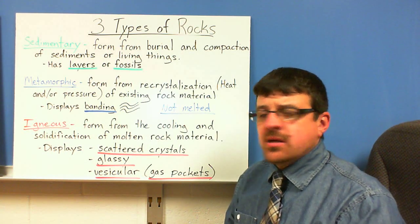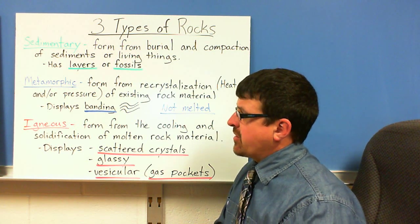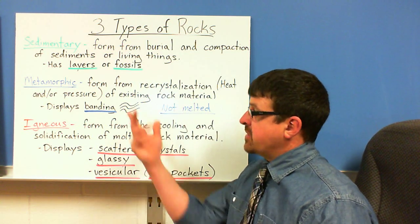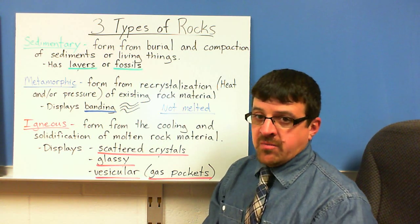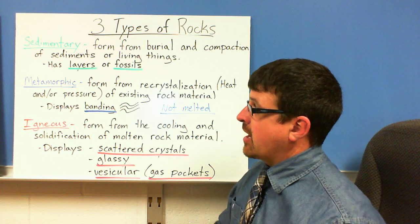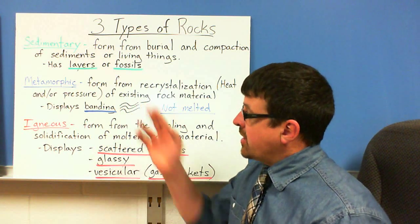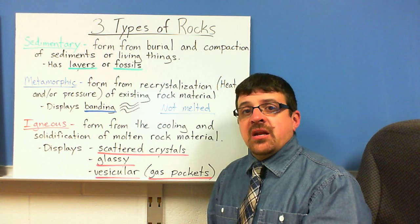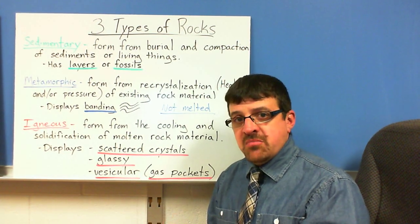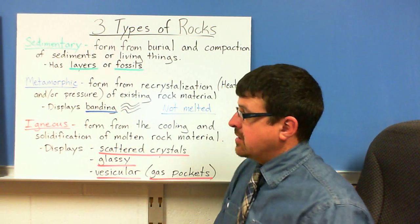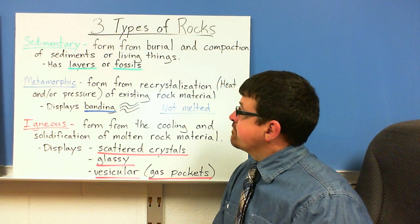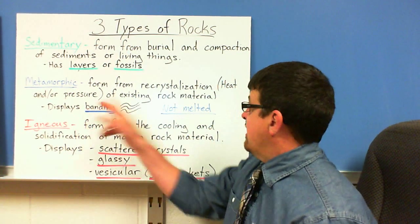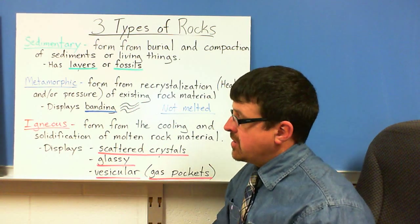Metamorphic rocks form from the recrystallization, or from the heat and pressure, of existing rock material. If you take a sedimentary rock and expose it to a lot of heat and pressure, you're going to have a metamorphic rock. They display banding — banding is a big thing with identifying a metamorphic rock. These have not been melted; they have heat and pressure, but not enough to melt them.